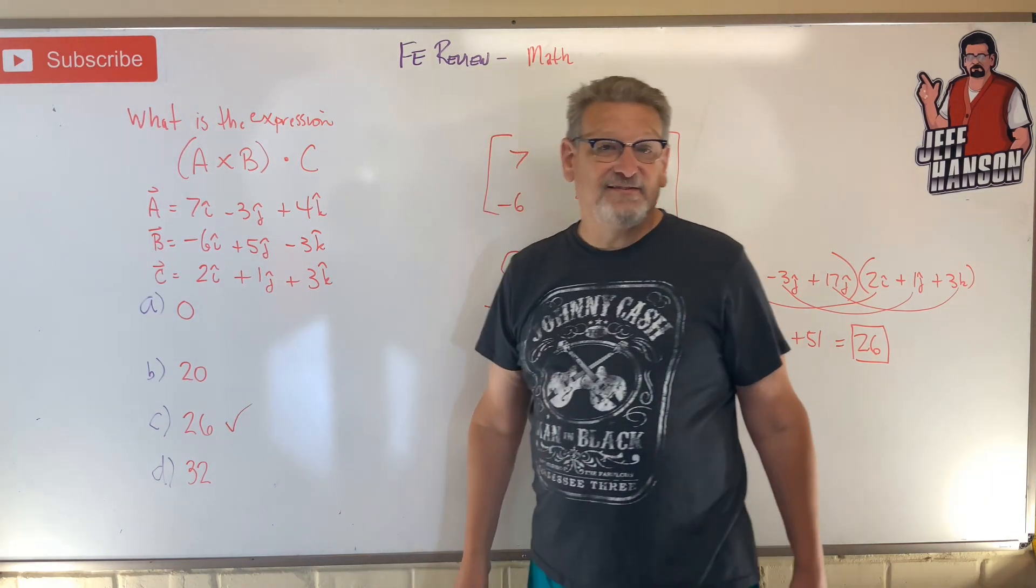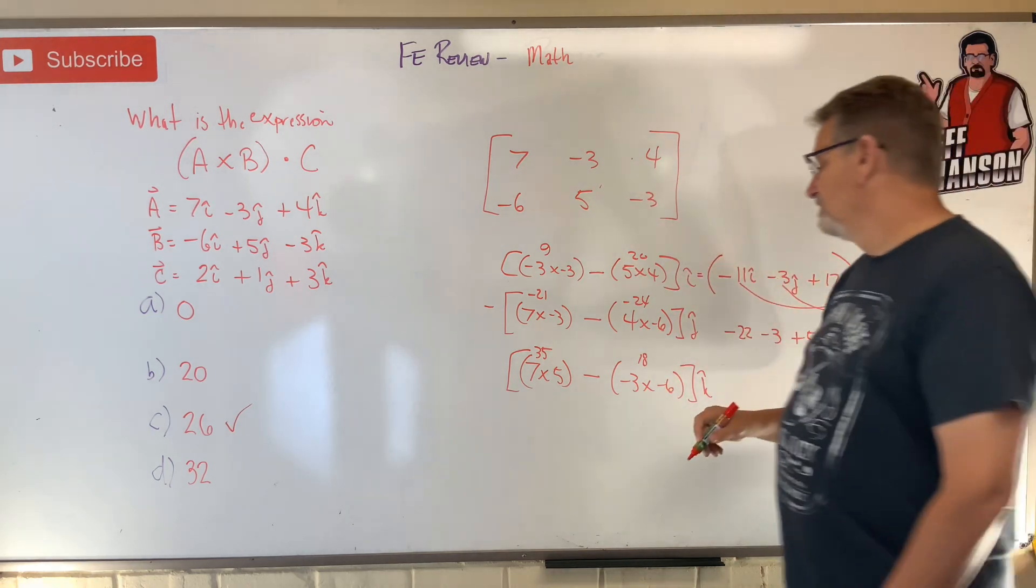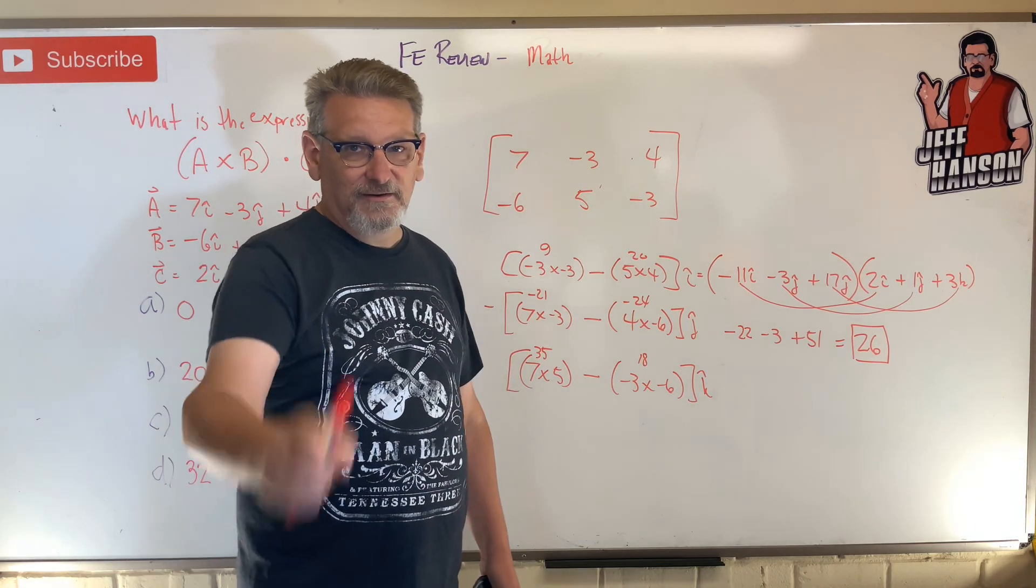And that's how you do dot product. Cross it first. And then dot it second. Alright? Let's do another one.